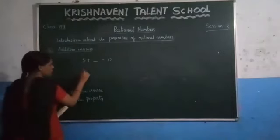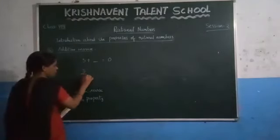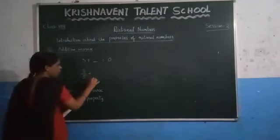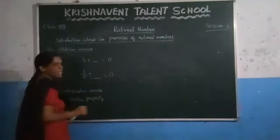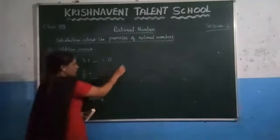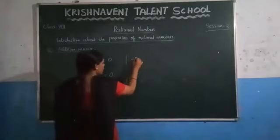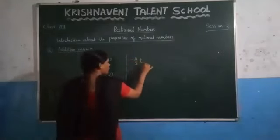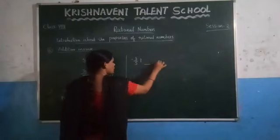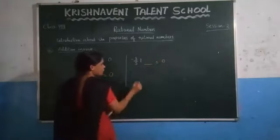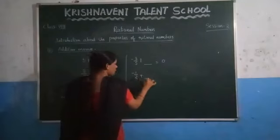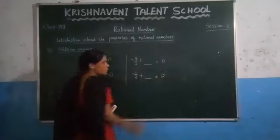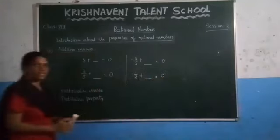Let us consider a few examples. Consider 3 by 5 — you have to add one number such that you get the result as 0. Consider also negative numbers: minus 3 by 5 — you have to add one number to get the result as 0. And minus 1 by 2 — you have to add one number such that you get the result as 0.